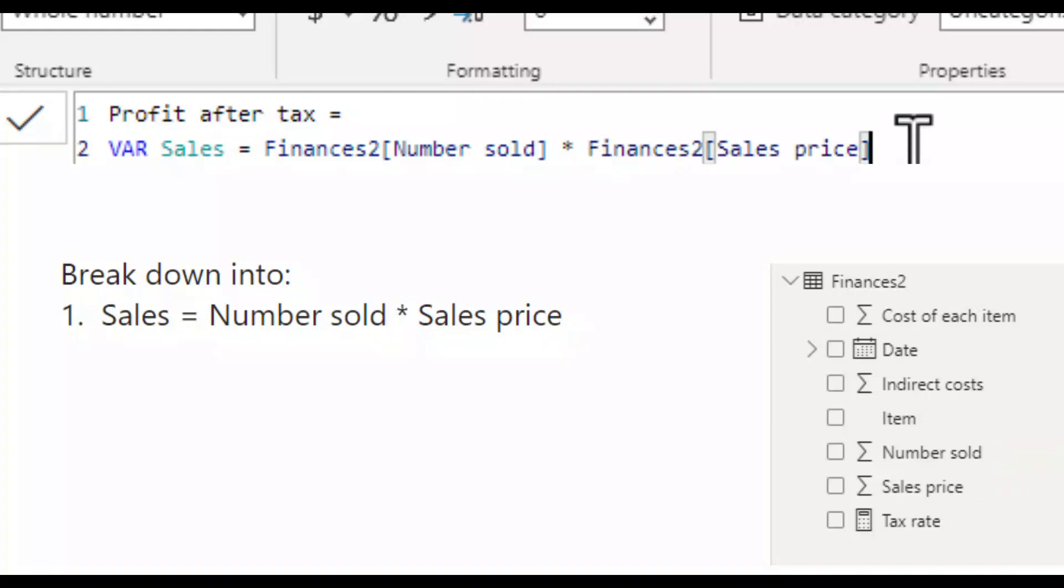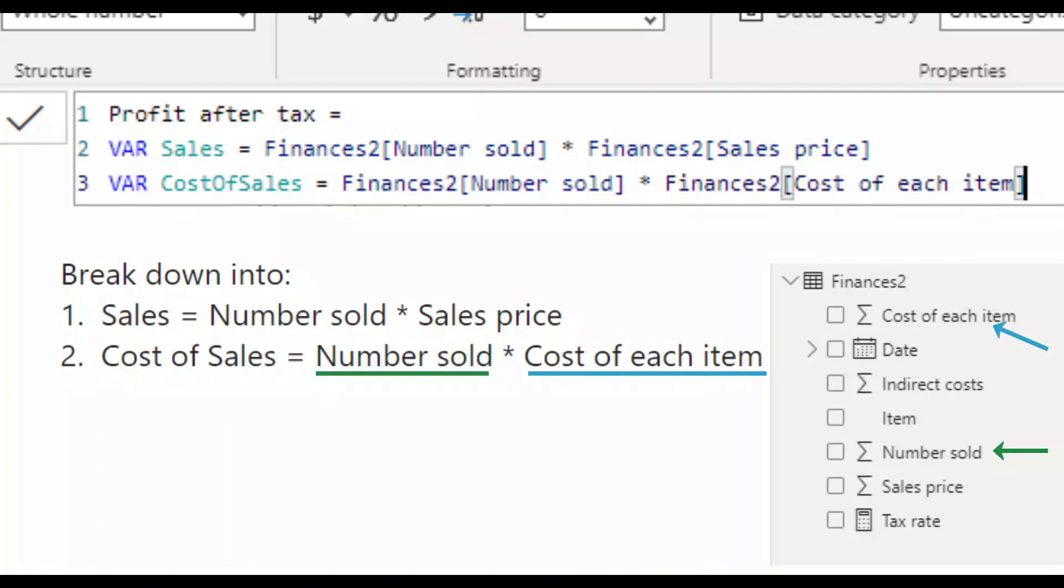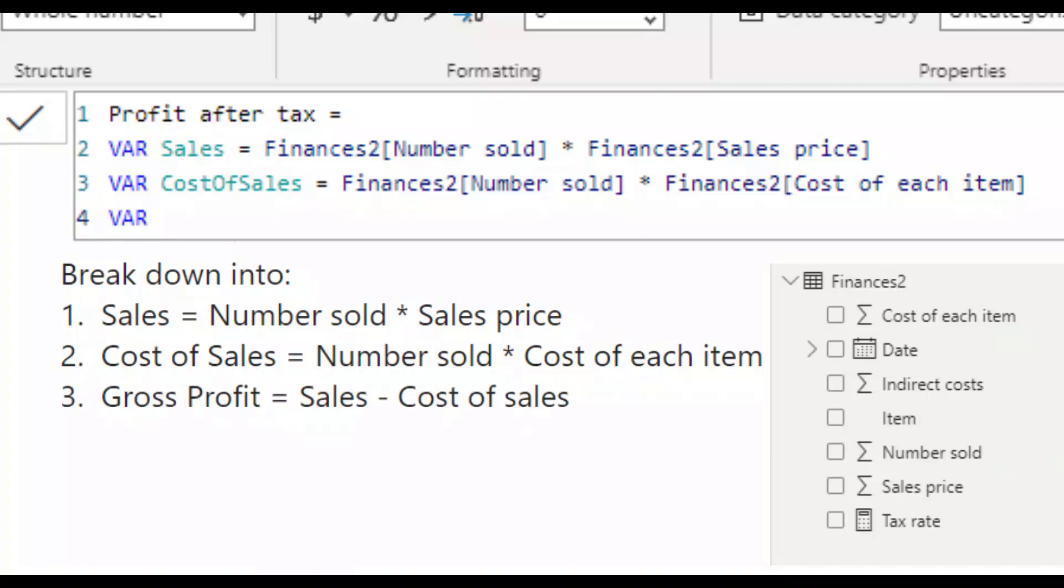On a new row, I set up the variable cost of sales and say it equals. Again, from my finances two table, I would like the number sold. And I multiply that by, from my finances two table, the cost of each item. On a new row, I set up another variable and call this one gross profit. And I say this equals. And this time, I use the names of my newly created variables. So I am using the variable sales from line two. So I type in sales minus. And I want to deduct the cost of sales. Again, using the variable in line three. So cost of sales.